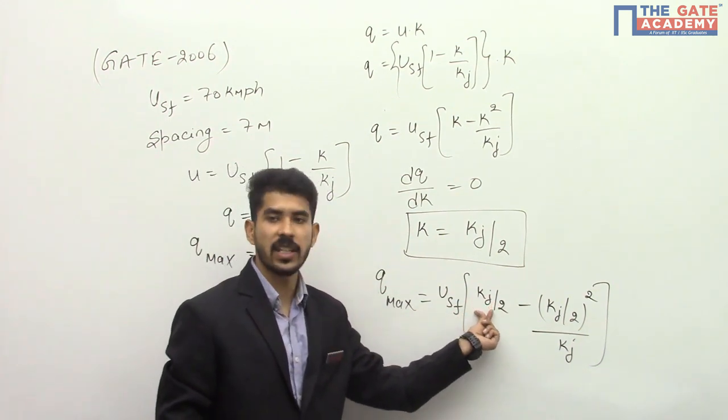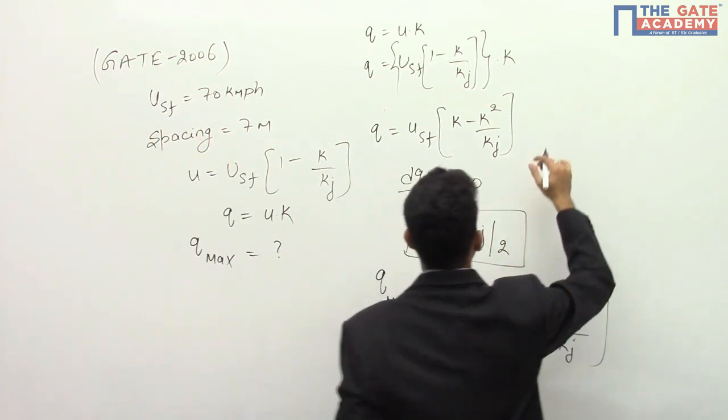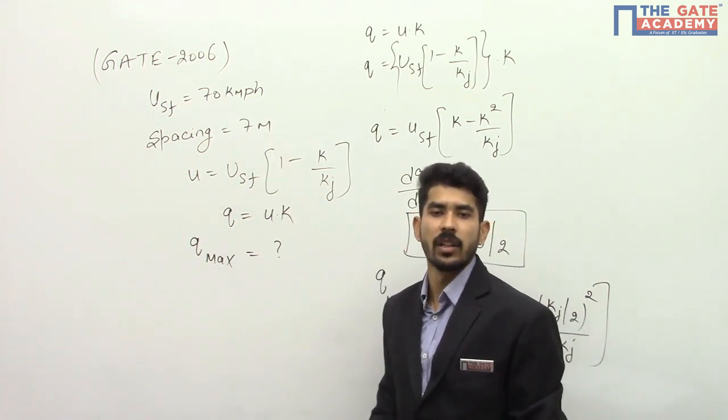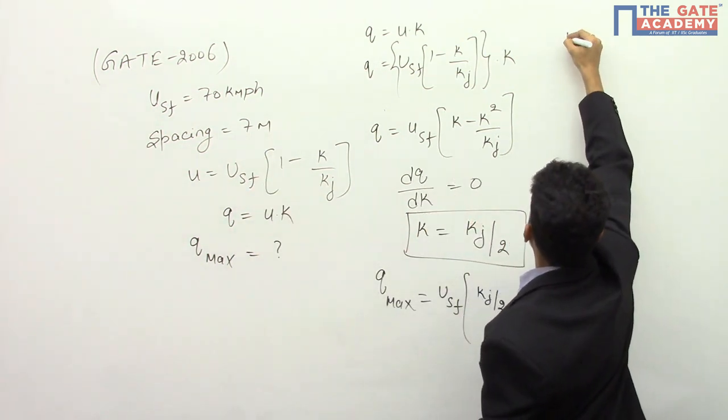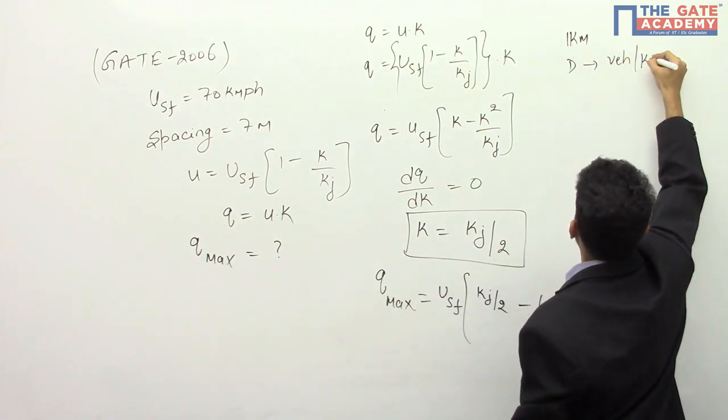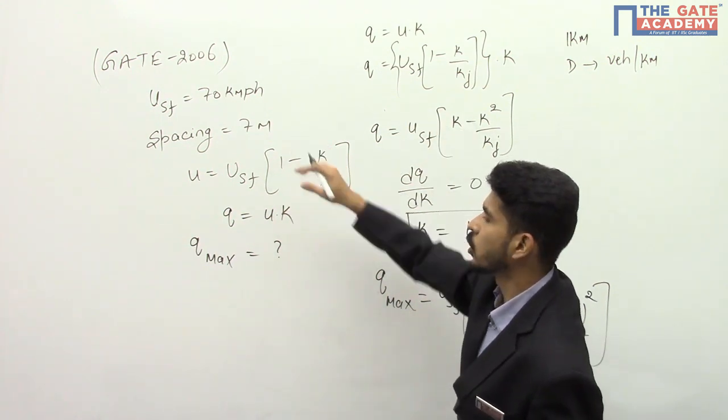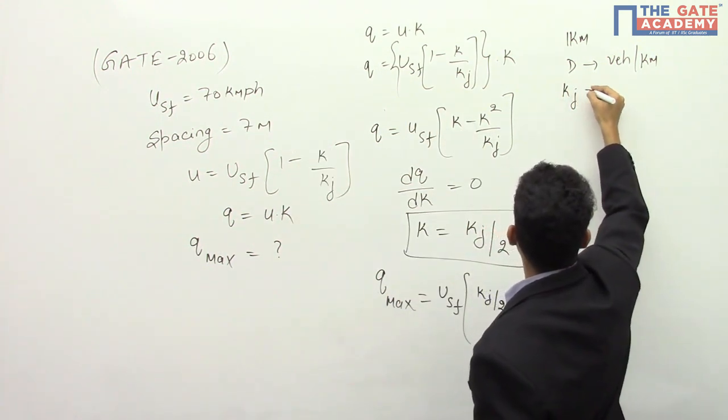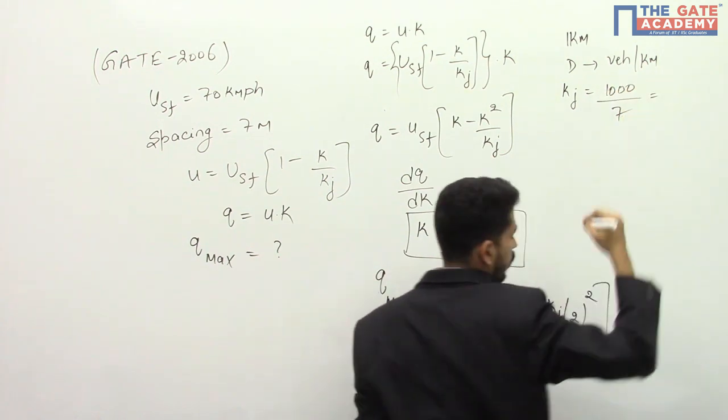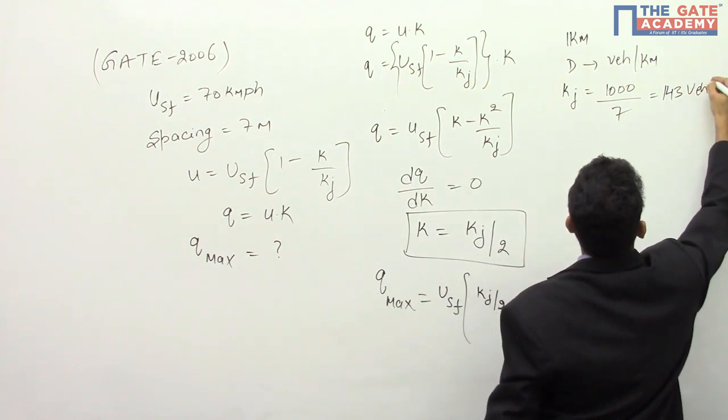Now the unknown here is kj. We already know usf is given in the equation as 70 kmph. For kj, to calculate kj he is saying average spacing is 7 meters. If you assume a stretch of 1 kilometer, since we know that density is vehicles per kilometer, in a span of 1 kilometer length the average spacing is 7 meters. So kj will be equal to 1000 divided by 7 which is equal to 143 vehicles per kilometer.